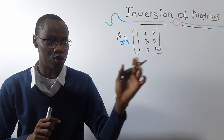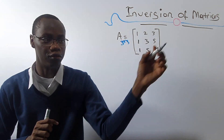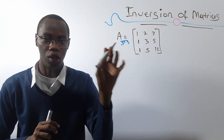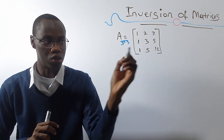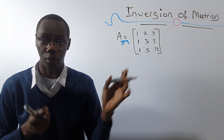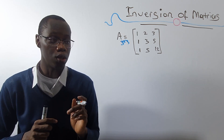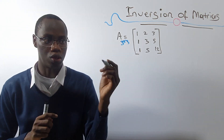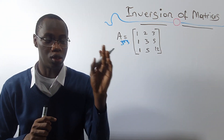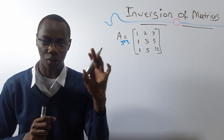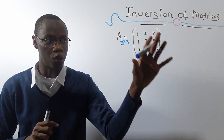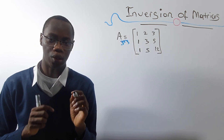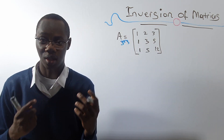You cannot be asked to find the inverse or determinant of a non-square matrix. This is a square matrix, not 3 by 2 or 2 by 2. So if you're asking to find a matrix that is the inverse of a matrix that is not square, then they're just trying to test your understanding.